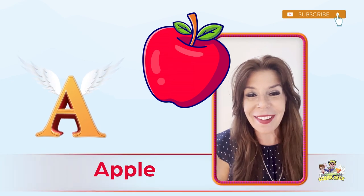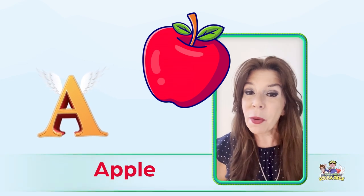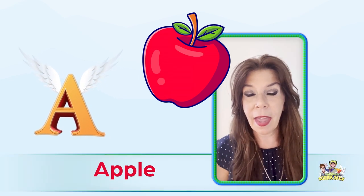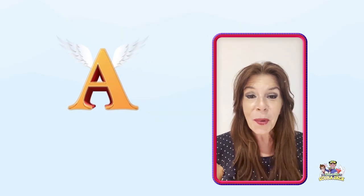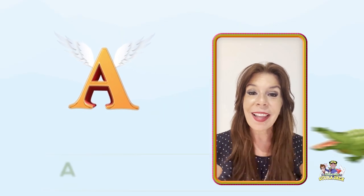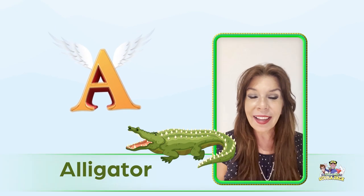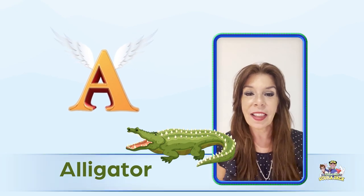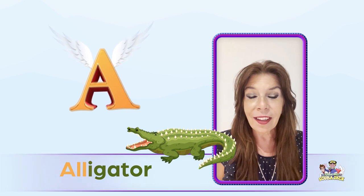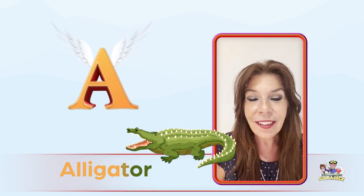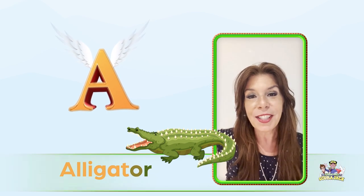Now we're going to go over some other words that begin with A. Are you ready? The first word is alligator. Can you say alligator? Let's say it three times — alligator, alligator, alligator! Do you see Mr. Alligator above my head?